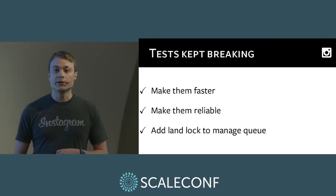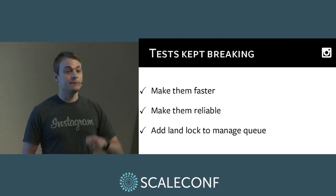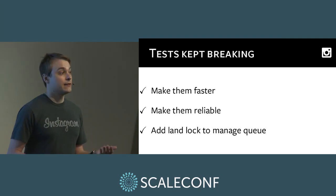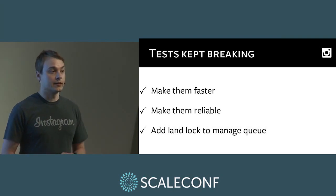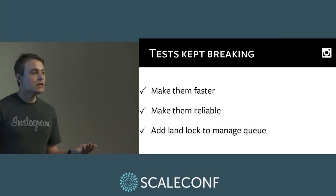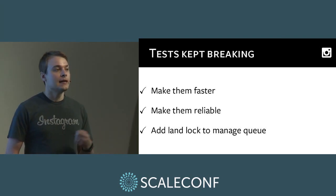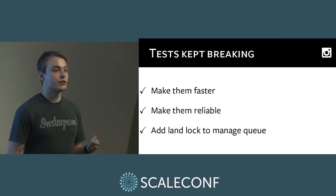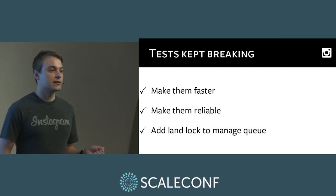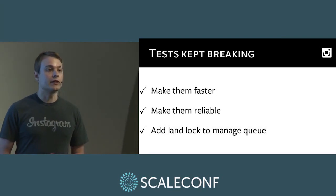We also added a landlock. The problem when we got into that broken state was that changes would keep getting landed, building up a backlog that then had to roll out in one big rollout — defeating one of the goals of continuous deployment. So we added a landlock that we could acquire when we noticed this state, throwing up a big warning when engineers tried to land changes. This allowed us to keep new changes out of master until we sorted things out and deployment was functioning normally again.